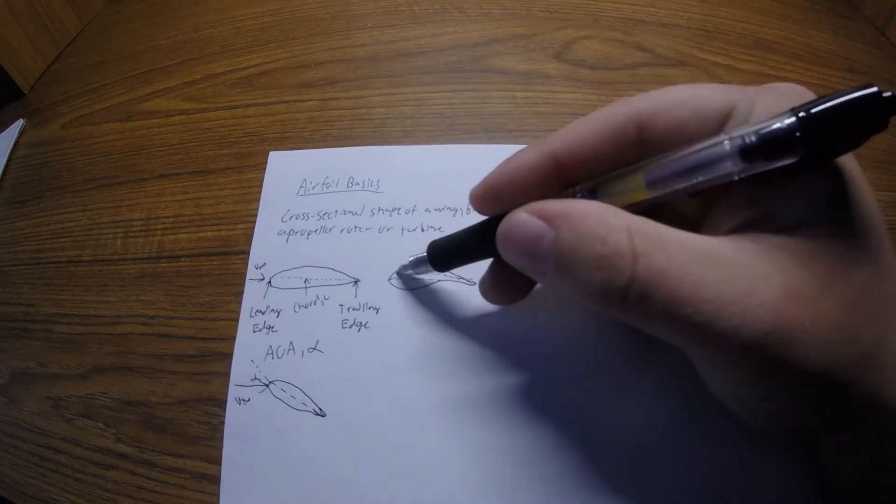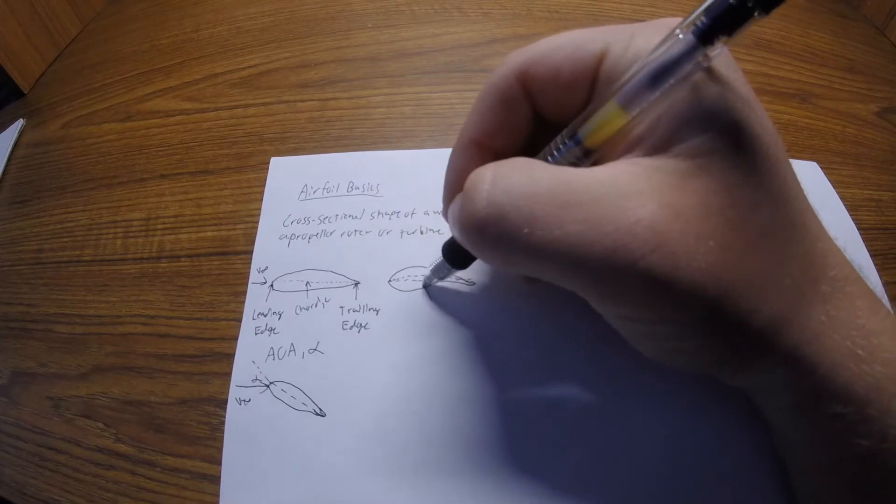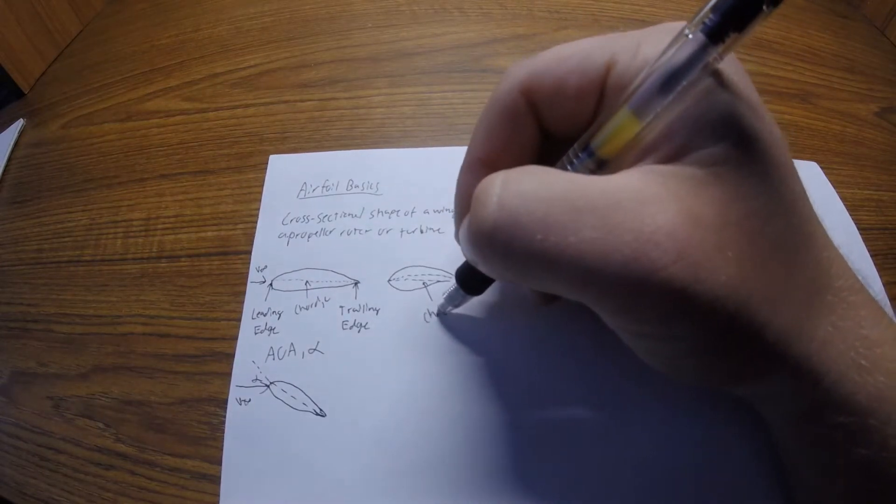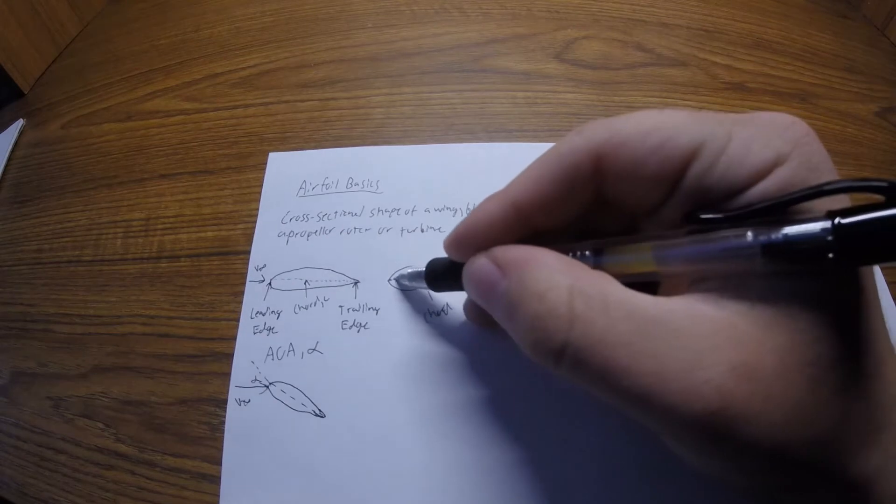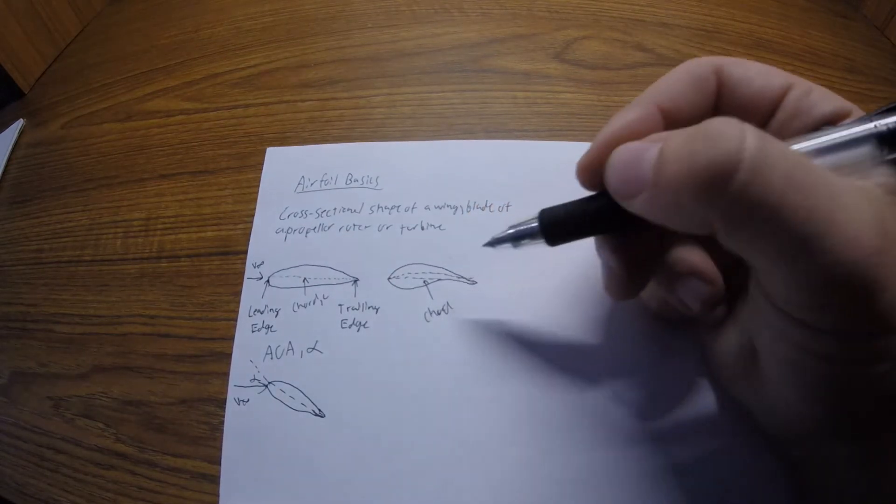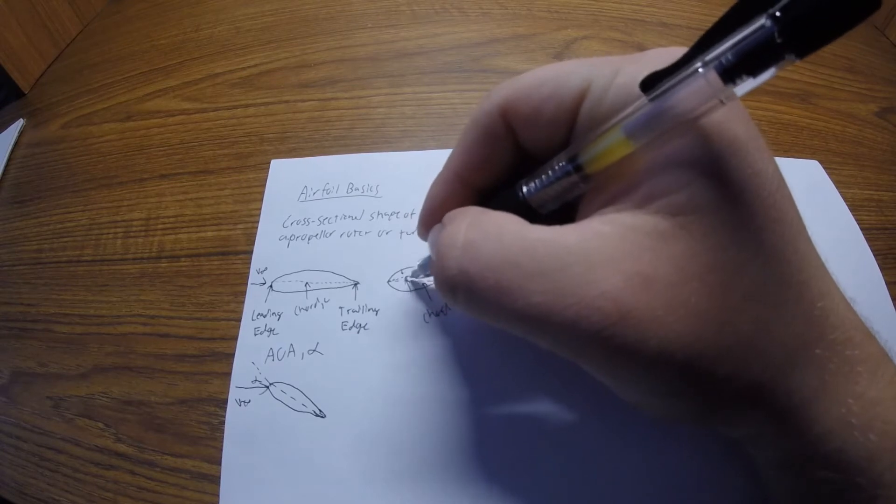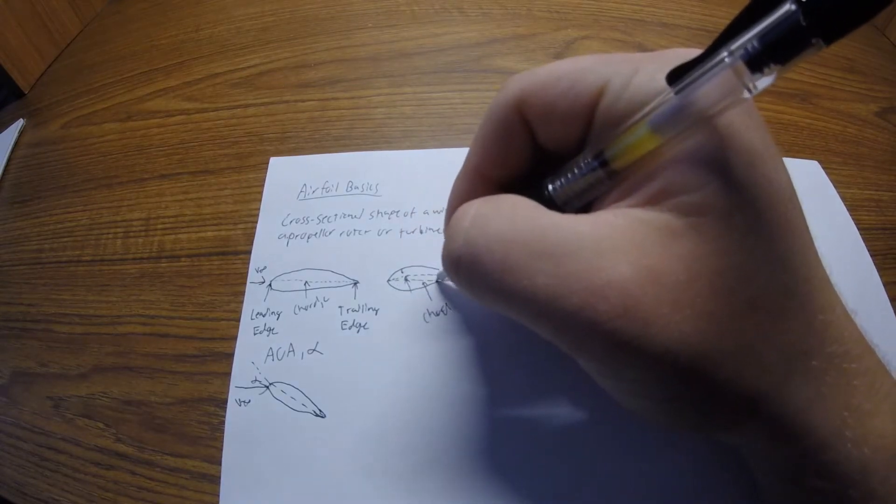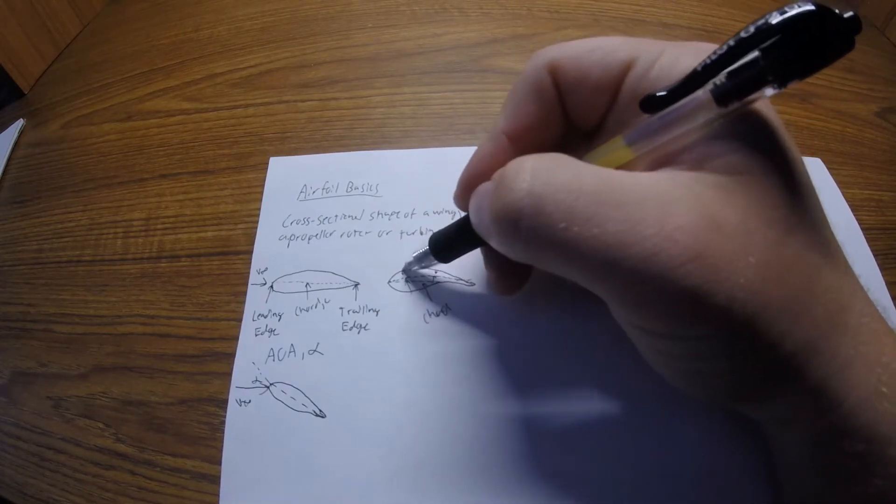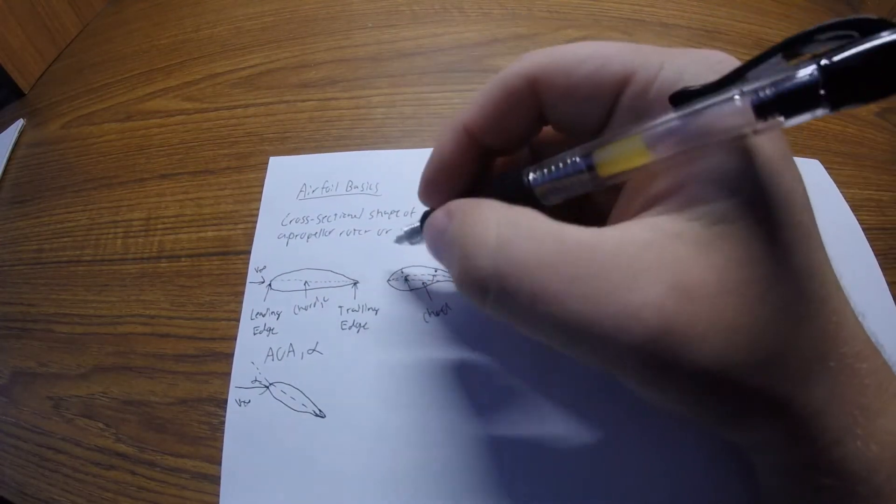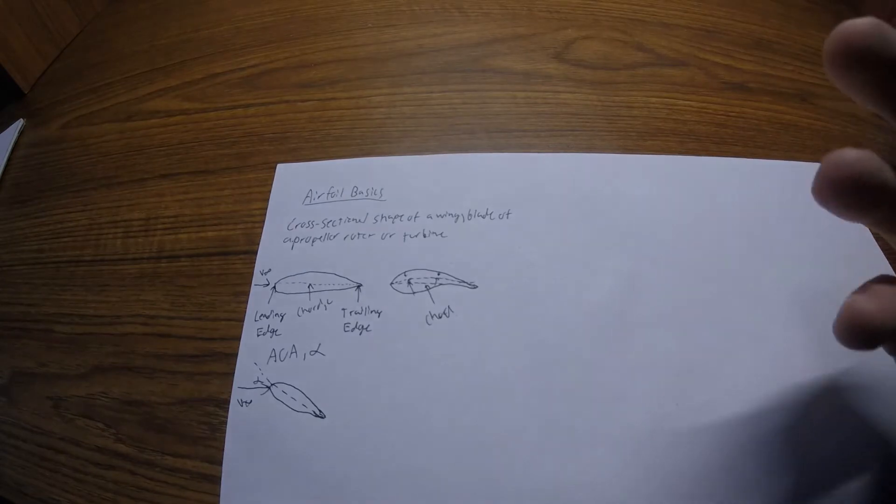Now for an airfoil like this which has a weird shape here, this is the top and this is the bottom. The chord line, C-H-O-R-D, runs from leading edge to trailing edge. The camber line is simply the middle line, called the mean camber line. If you took the distance between the top and the bottom, the middle right there is the camber line. So there's a difference between the chord line and the camber line for asymmetrical airfoils.